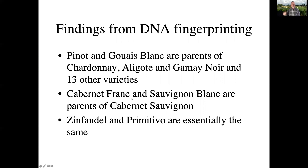Because pollination can be self-fertilization of the flower, but wind or insects can also carry pollen to other genotypes and cause spontaneous or natural crosses. Another interesting discovery was that the parents of Cabernet Sauvignon are Cabernet Franc and Sauvignon Blanc — a natural occurrence that occurred in the fields in Bordeaux somewhere. Through a sort of genetic detective work, it was also discovered that Zinfandel actually originated from Croatia and was carried to Southern Italy, where it was then brought to the United States. The grape variety we call Primitivo is essentially the same as Zinfandel.